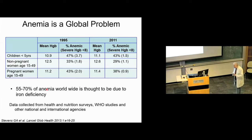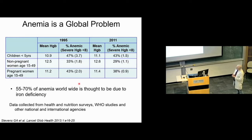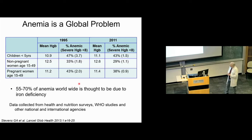Anemia is a massive global problem. Worldwide, as many as half of children are anemic. Non-pregnant and pregnant women also have very high risk of anemia. The World Health Organization has estimated that roughly half of anemias in the developing world are due to iron deficiency — a lot of people that could be impacted and have their health improved.